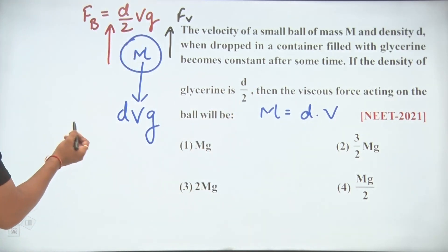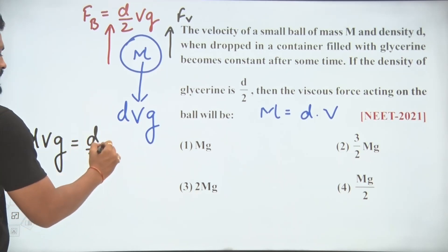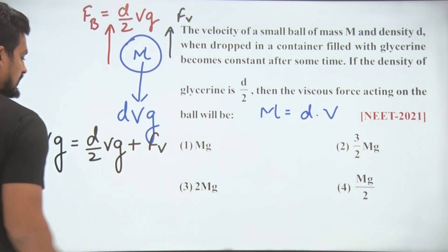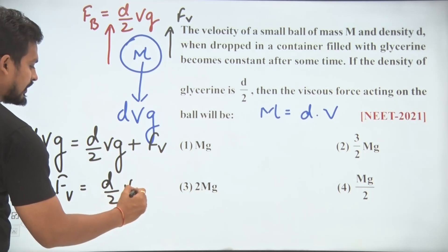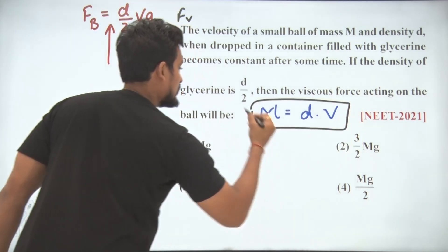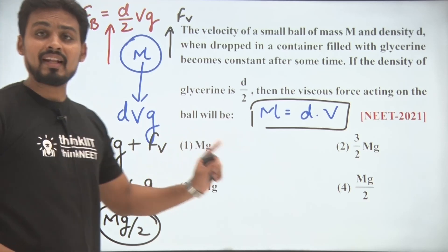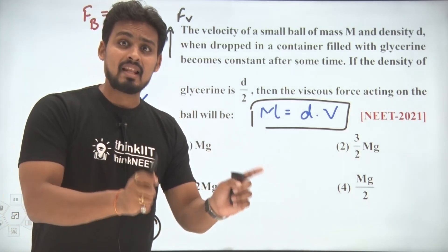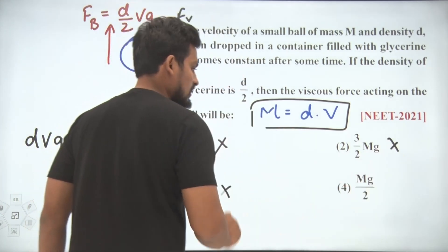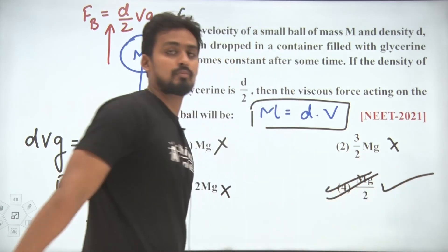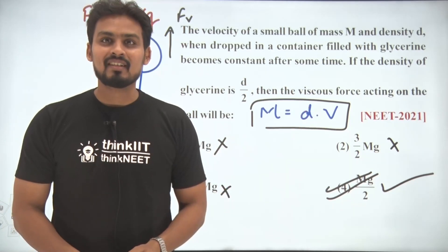Since net force is zero, the net downward force equals the net upward force: DVg = (D/2)·V·g + Fv. Therefore the viscous force Fv = (D/2)·V·g. Since mass M = D·V, we can write this as Mg/2. The final answer is Mg/2, which is option 4. Options 1, 2, and 3 are wrong. Thank you.